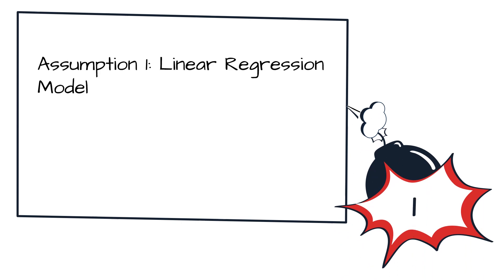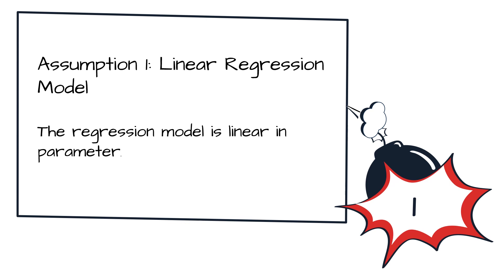Let's begin with our first assumption of the linear regression model. The first assumption states that there should be a linear regression model — specifically, that the linear regression model should be linear in its parameters. Parameters here mean beta 1 and beta 2, so this assumption states that beta 1 and beta 2 should be linear.